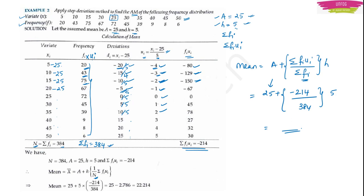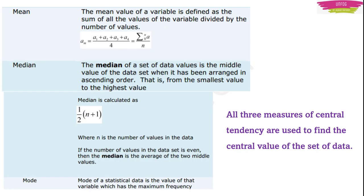Mean is finding the central value of a given set of data. Along with mean, we have two more terms: median and mode. These three — mean, median, and mode — are the three measures of central tendency. They are all used to find the central value of a given set of data, though the procedure to find each is different.